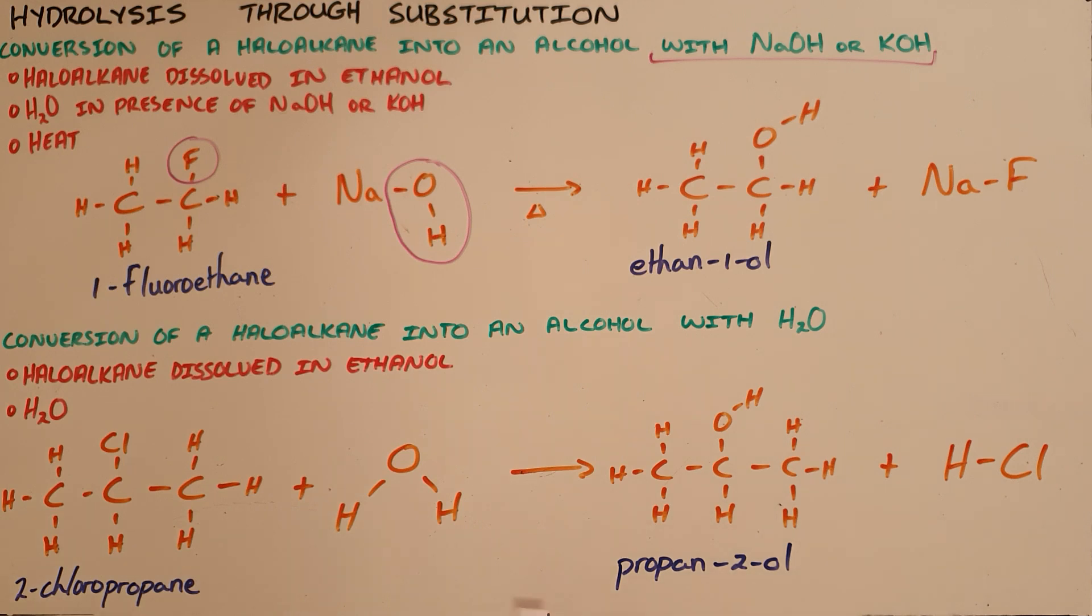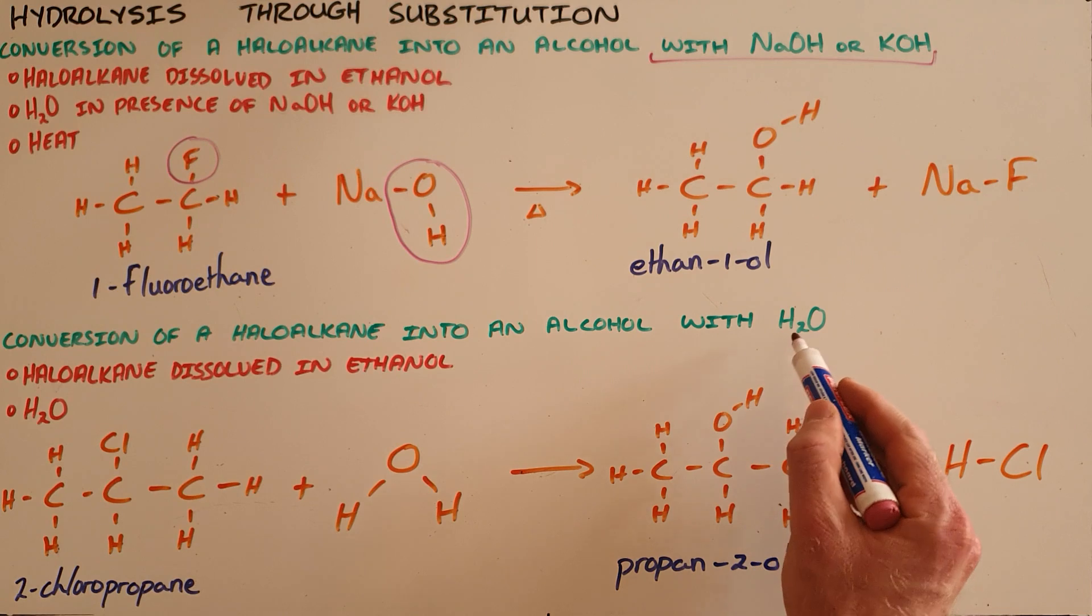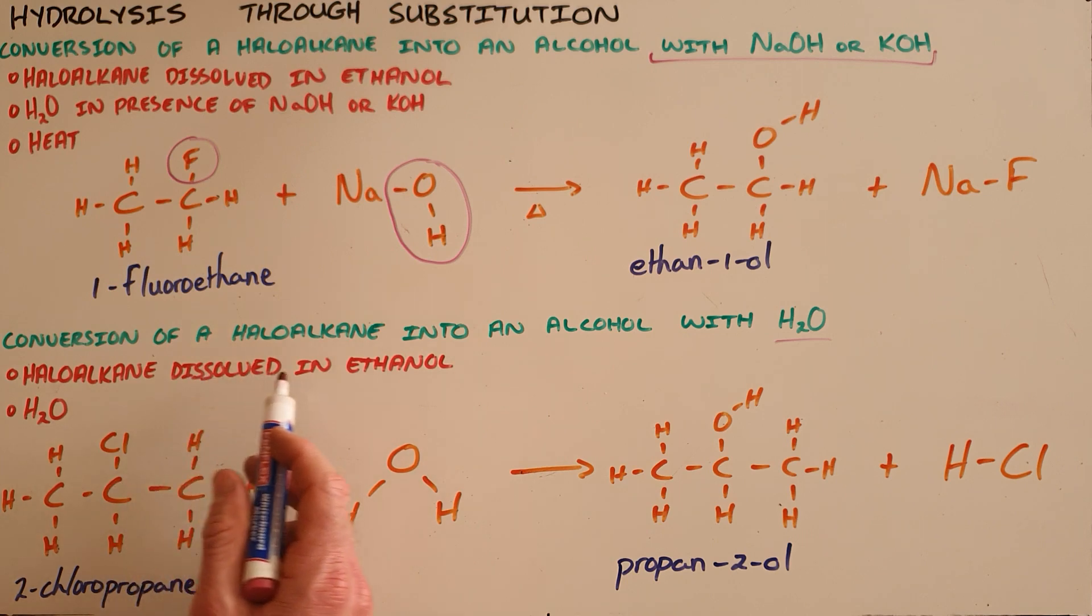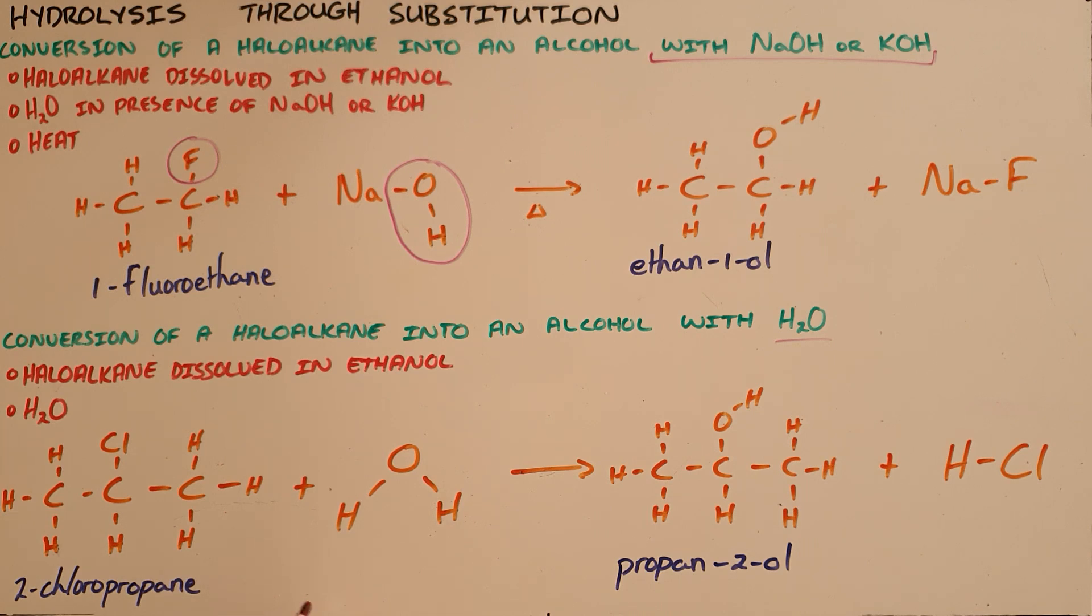The second type of hydrolysis through substitution reaction is with only water, not with sodium hydroxide or potassium hydroxide. The specific conditions are: firstly, the haloalkane must be dissolved in ethanol, same as the previous reaction, and there must be water present in excess. In this example, we have 2-chloropropane that reacts with water.